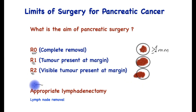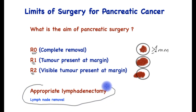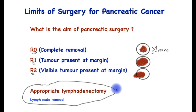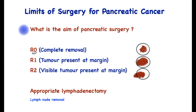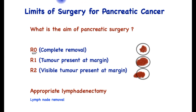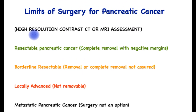The surgery should also aim to remove the appropriate lymph nodes along with the cancer. Lymph nodes are fleshy masses which can trap cancer cells, and hence they hold prognostic value as well as the need to remove them together with the specimen.